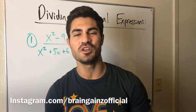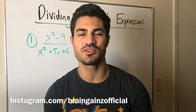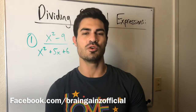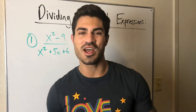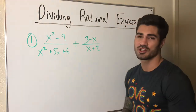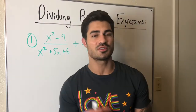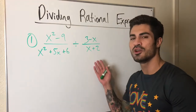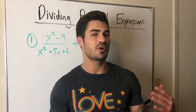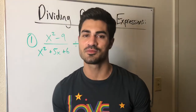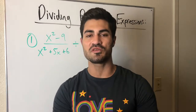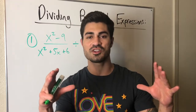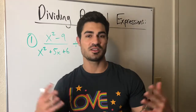Hello everybody, welcome to another video. Get ready to flex those brain muscles because today we're going to divide some rational expressions. Quick recap: what is a rational expression? It is simply a fraction with polynomials — a polynomial over a polynomial, just like this example with these two rational expressions. We already did a video on multiplying them, and the steps were: first, factor everything completely; second, combine under one fraction; then cancel and write the answer in simplified form.